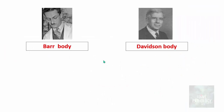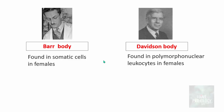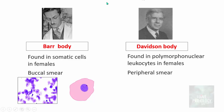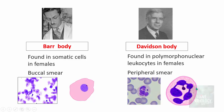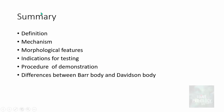To conclude, let us understand the differences between the Bar Body and the Davidson Body. Bar Body is found in somatic cells in females, seen in buccal smears as a darkly stained structure in the periphery of the nucleus of squamous epithelial cells. Davidson Body is found in polymorphonuclear leukocytes — neutrophils — in females, seen in peripheral smears as the drumstick appearance. This completes the topic of Bar Body, covering definition, mechanism, morphological features, indications for testing, and the differences between Bar Body and Davidson Body.